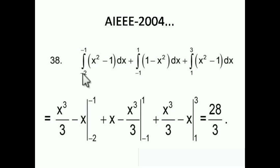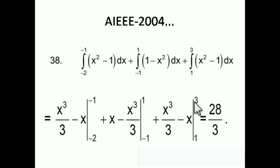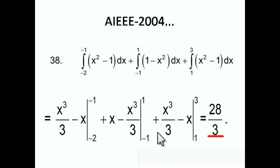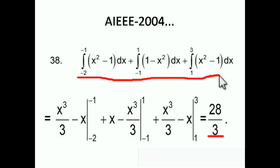Now integrate each part: ∫(x² − 1)dx = x³/3 − x, limits −2 to −1; plus ∫(1 − x²)dx = x − x³/3, limits −1 to 1; plus ∫(x² − 1)dx = x³/3 − x, limits 1 to 3. Applying the limits and simplifying gives 28/3. The difficult part is the setup — the arithmetic is straightforward. Answer: option 1, which is 28/3.